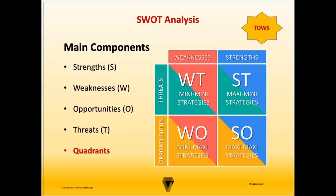For example, four for strengths, four for weaknesses, four for opportunities, and four for threats. Linking generally occurs as weaknesses to threats (WT), asking how our weaknesses expose us to threats and what is the worst-case scenario. Then we link strengths to threats, asking how we will use our strengths to reduce or prevent threats. Then weaknesses to opportunities, considering how weaknesses impede potential opportunities or how opportunities can mitigate weaknesses. And finally, strengths to opportunities — how can we use our strengths to take advantage of opportunities?